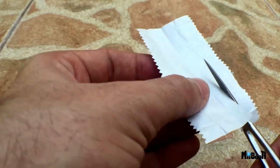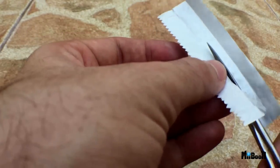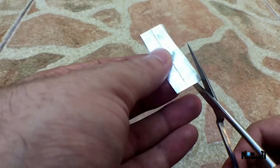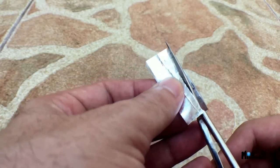You can even cut each wrapper into 3 strips instead of 4. This will give you slightly wider ends which are easier to handle. I prefer 4 as it gives me more strips per wrapper.